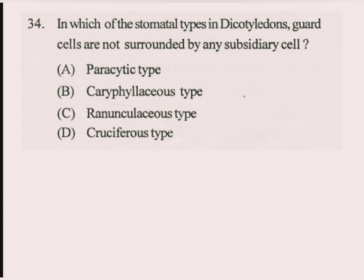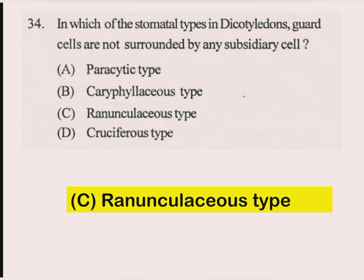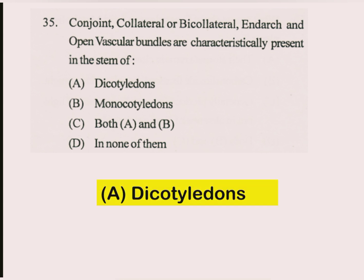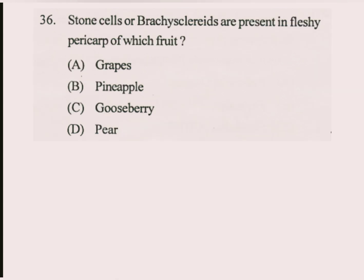Question number 34. In which of the stomatal types in dicotyledons are guard cells not surrounded by any subsidiary cell? The answer is Ranunculaceous type. Question number 35. Conjoint, collateral or bicollateral, and arched and open vascular bundles are characteristically present in the stem of dicotyledons. Question number 36. Stone cells or brachysclerids are present in the fleshy pericarp of which fruit? Answer: Pear.